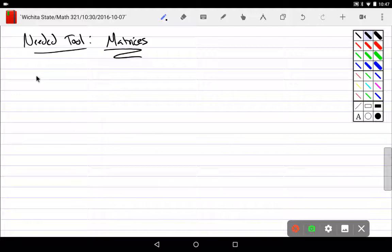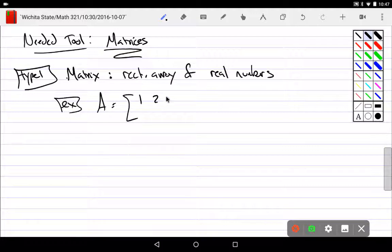So, the first one is, type one is the matrix is going to be defined as a rectangular array of real numbers. So, for example, A is equal to [1, 2, 3; 4, 5, 6].